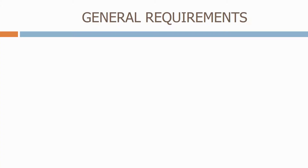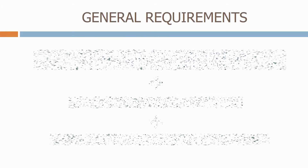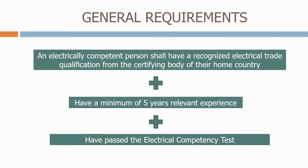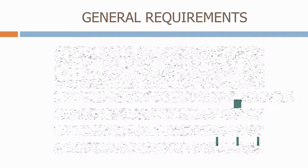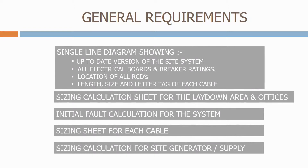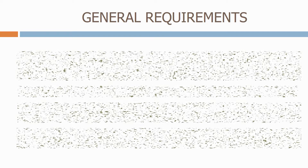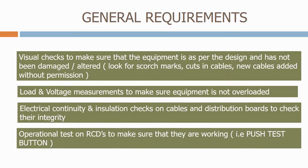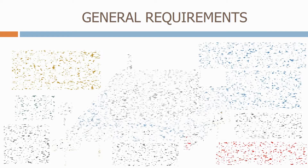We start by looking at the general requirements for the construction site electrical system. This includes defining what a competent person is, and the design documentation required on site. We then go on to how we inspect electrical site equipment, and we go through some examples of good and bad practice.